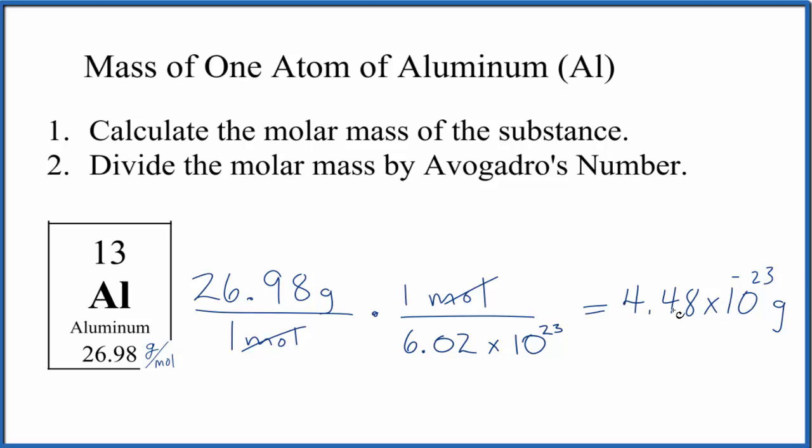Make it a smaller number, 4.48 times 10 to the negative 26. It makes sense that this is a really small number. Atoms are really small, so they have a small mass. We should get a small number here.